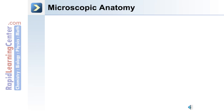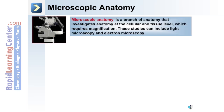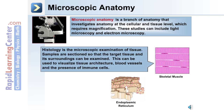The other major branch of anatomy we'll discuss in this tutorial is microscopic anatomy — anatomy at the tissue and cellular level. This requires magnification through a microscope, whether it be light microscopy or electron microscopy. We'll also discuss histology, which is the microscopic examination of tissue and its relation to other tissues. In order to do histology, samples are sectioned so the target tissue and its surroundings can be examined.